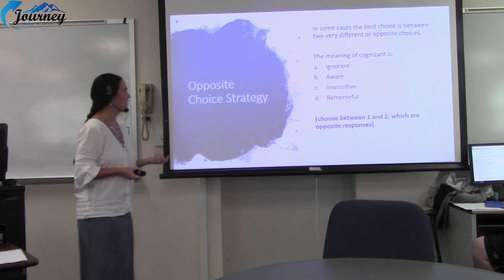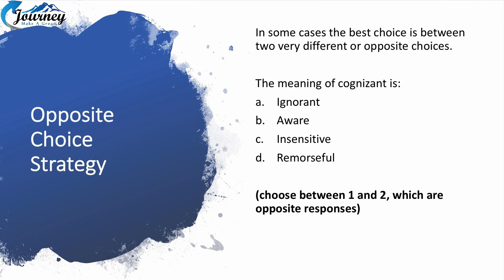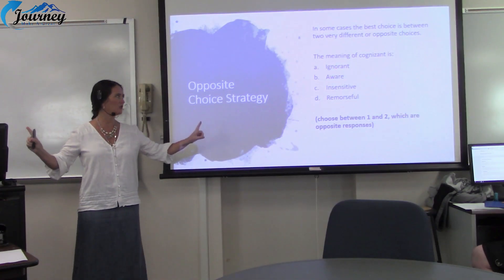Then we have the Opposite Choice Strategy. In some cases the best choice is between two very different or opposite options. For example: 'The meaning of cognizant' — choices are A: ignorant, B: aware, C: insensitive, D: remorseful. Here you would want to choose between ignorant and aware, because those are total opposites.